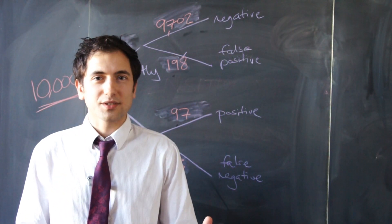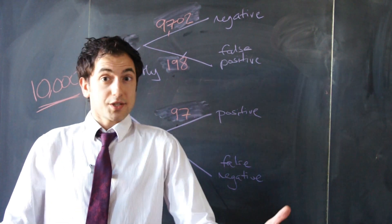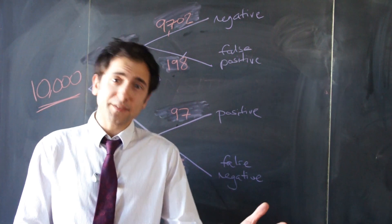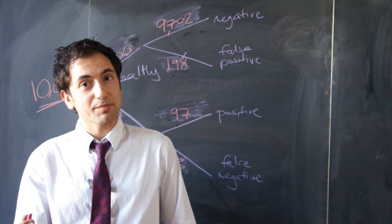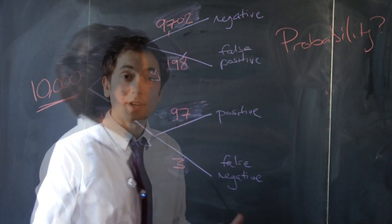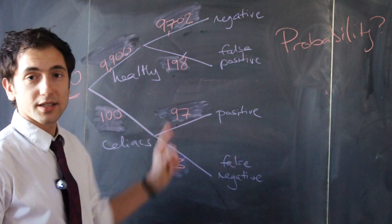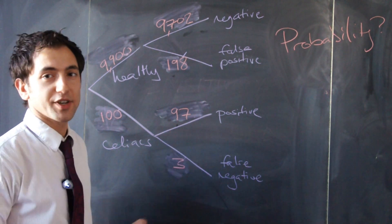Let's go back to the original question: test result is positive, do you have the disease? We're looking for the probability that you have the disease given that the test result is positive. Approximately 300 people have tested positive—the 198 false positives and the 97 true positives. So roughly 300.